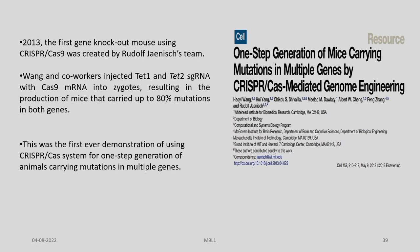Many years later in 2013, Rudolf Janice again led a team and was the first to develop a gene knockout mouse using CRISPR-Cas9. This paper, published in Cell, reports a single-step generation of mice carrying mutations in multiple genes by CRISPR-Cas mediated genome engineering. Wang and co-workers injected TET1 and TET2 single guide RNAs with Cas9 mRNA into zygotes, resulting in mice carrying up to 80% mutations in both genes — the first demonstration of CRISPR-Cas for one-step generation of animals with mutations in multiple genes.